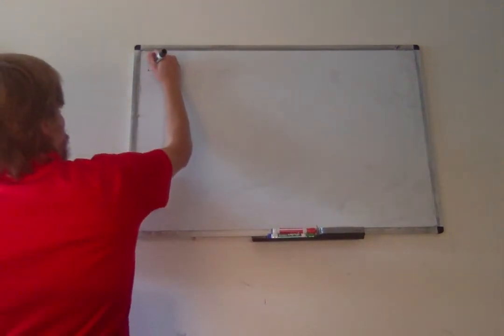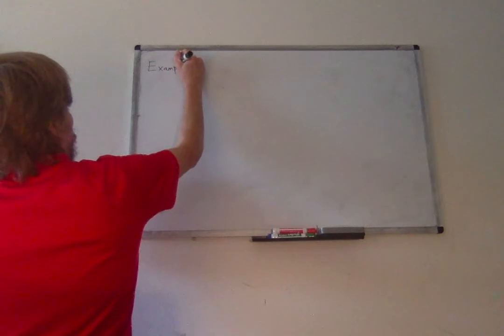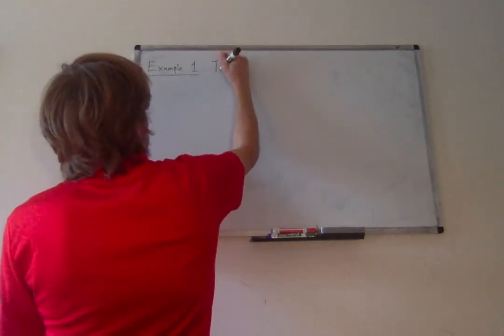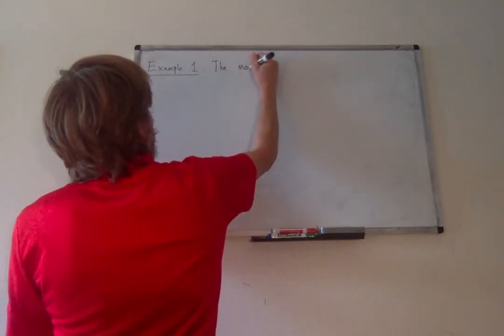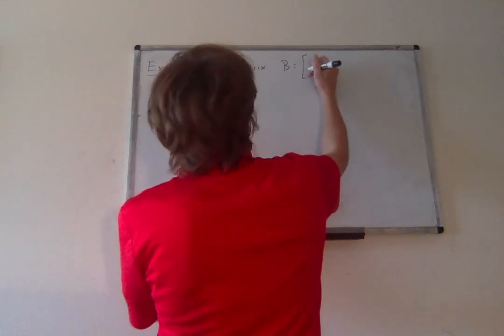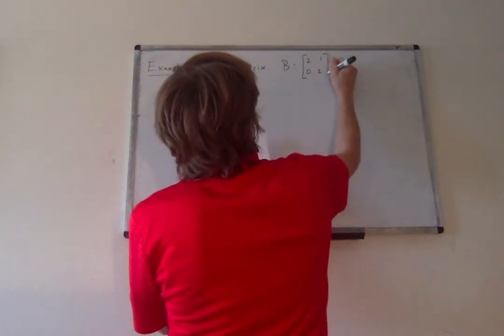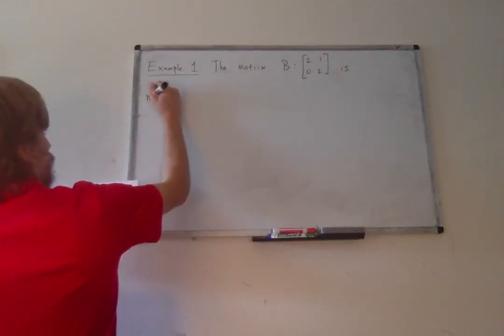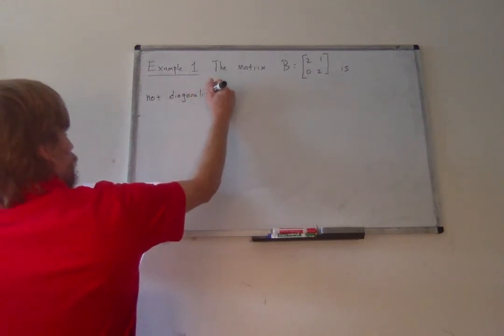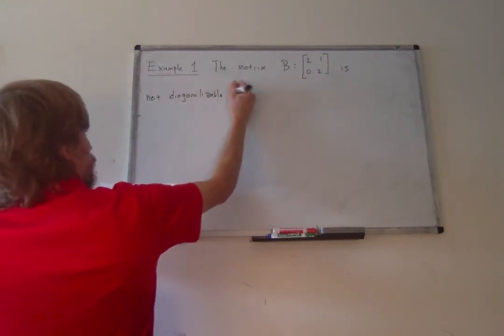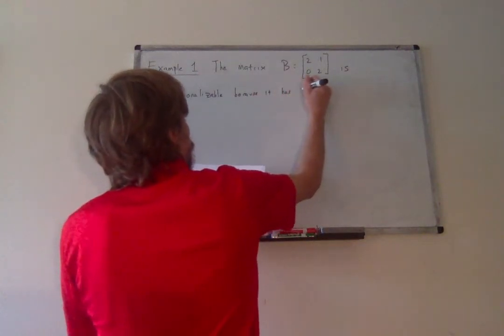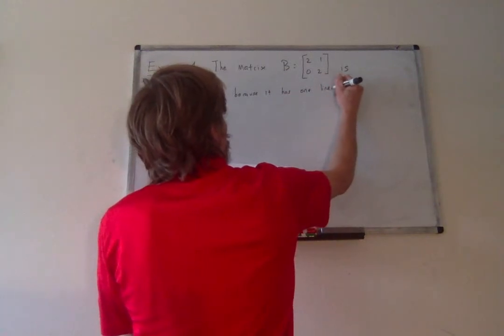Example one: we actually know that matrix B, which we saw previously, is not diagonalizable because it has only one linearly independent eigenvector.